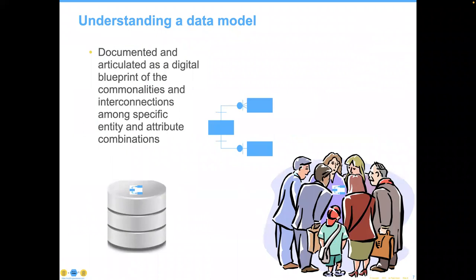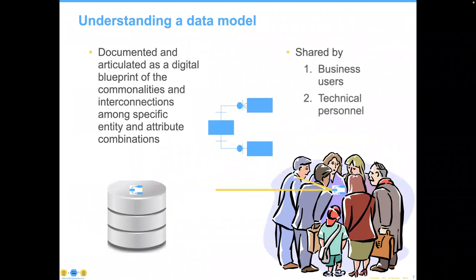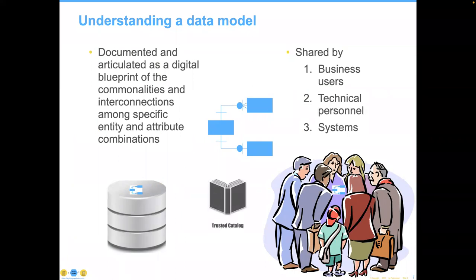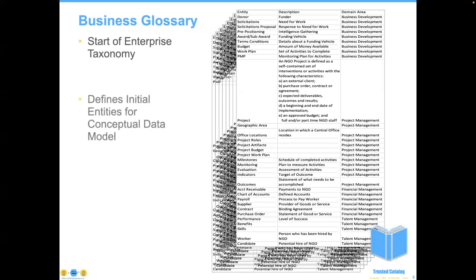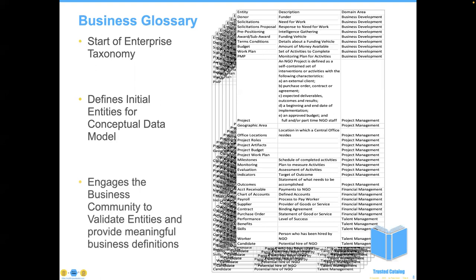The real purpose of data models is to facilitate understanding. We want to do this among three particular groups of people: business users, technical personnel, and the systems themselves — all speaking the same language. If they don't, we end up with nothing but confusion. The only way to achieve this goal is by using something we call a trusted catalog — you've probably heard it called a business glossary or a data dictionary. The reason this is critically important is because most people don't know much about or care much about data.